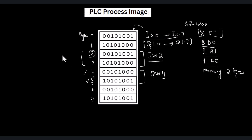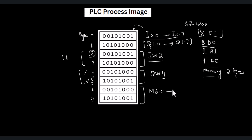As you may be familiar, a word is comprised of 16 bits or two bytes. Last but not least, these two bytes are allocated for memory bits or memory bytes. If we want to use it in digital form, we can start from M6.0 and end at M7.7 if we use all 16 bits as digital memory data.